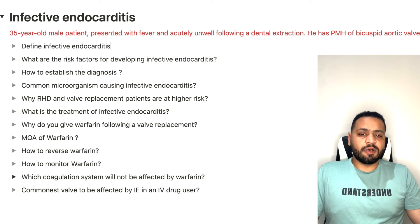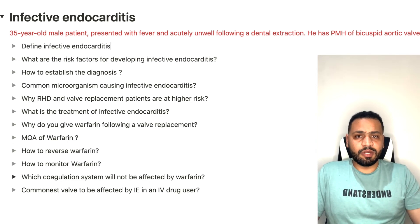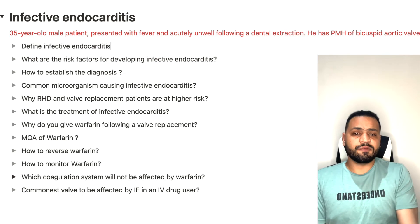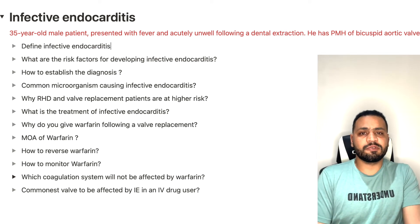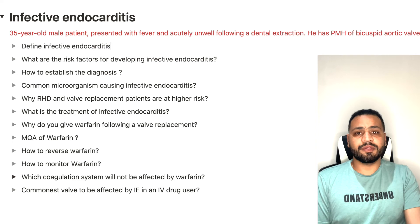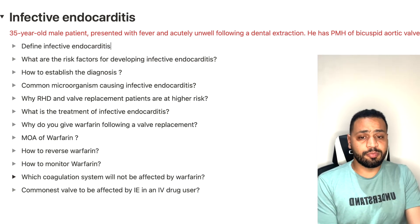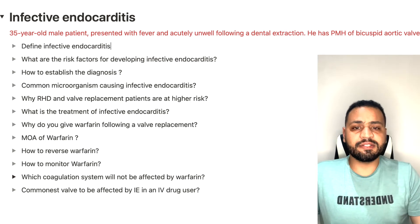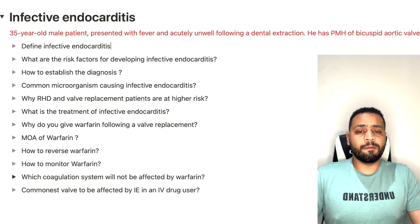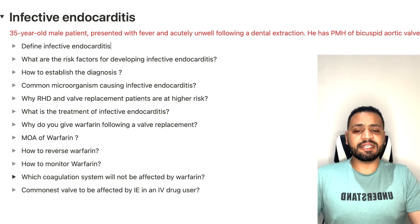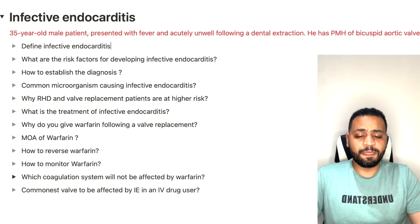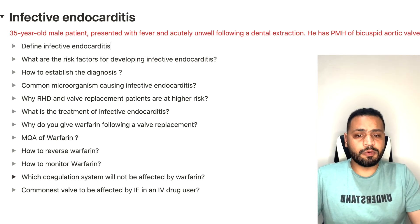The next topic is warfarin — how it works, how to monitor it, and how to reverse it. Patients with valve replacement need warfarin because they are at high risk of thromboembolism. Warfarin works as a vitamin K antagonist, antagonizing the vitamin K-dependent clotting factors, which are factors 9, 10, 7, and 2. Warfarin is monitored by INR.